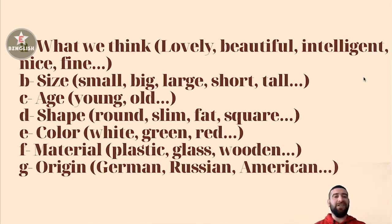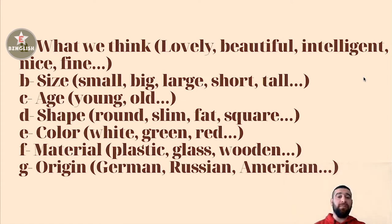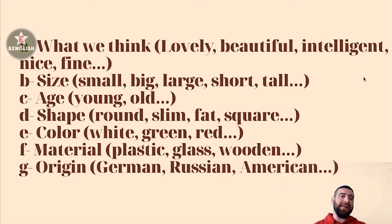Color — رنگ‌ها — are also adjectives: White, Green, Red و غیره — سفید، سبز، قرمز و هر رنگ دیگه‌ای که اضافه کنیم. Material — جنس — مثل Plastic، Glass، Wooden — چوبی — این هم یه دسته دیگه از صفت‌هاست.